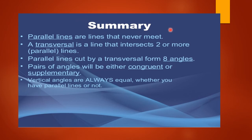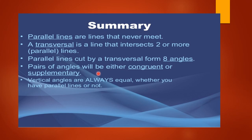Summary — what we learned in this session: parallel lines are lines that never meet. A transversal is a line that intersects two or more parallel lines. Parallel lines cut by a transversal form eight angles. Pairs of angles will be either congruent or supplementary. Vertical angles are always equal whether you have parallel lines or not.